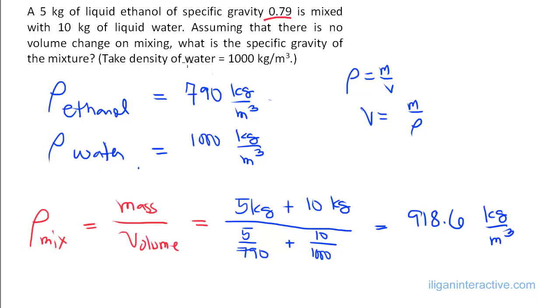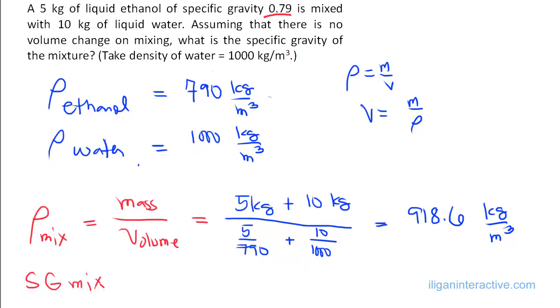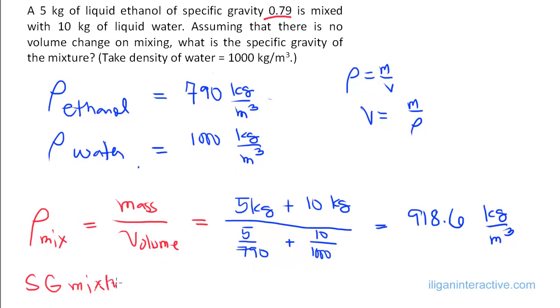And again, what is being asked is just the SG, specific gravity of the mixture. So SG of the mixture, the specific gravity of the mixture. Mixture is equal to this one, 918, the actual density. Again, definition of SG is ρ of the fluid over ρ of the reference substance at 4 degrees Celsius, which is, of course, water. And here, we are just assuming it's 1000.